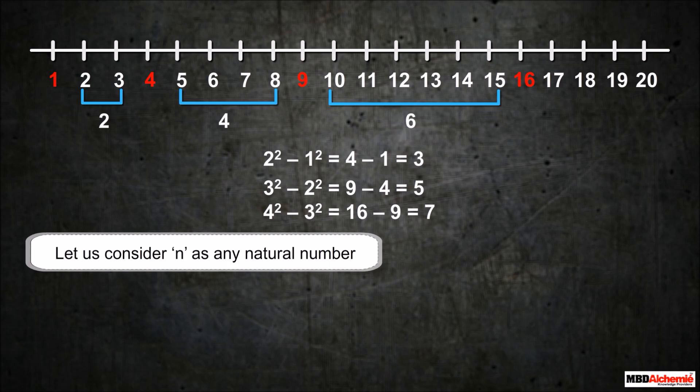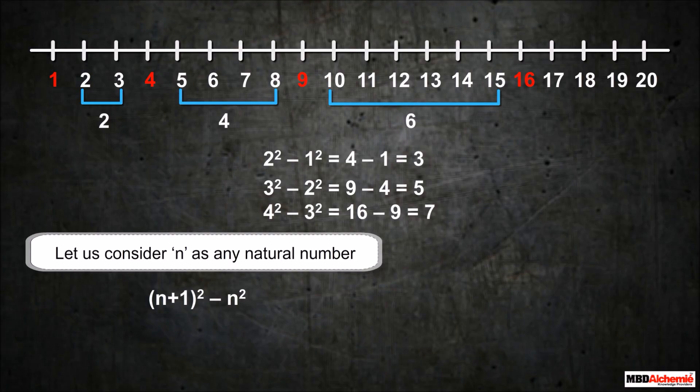Let us consider n as any natural number. Therefore, its consecutive number is n + 1. Then we write their difference in squares as (n + 1)² − n², which is equal to 2n + 1.